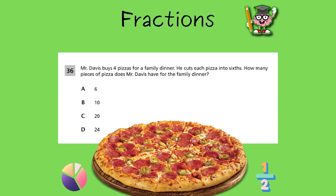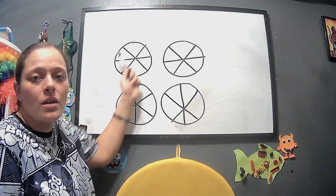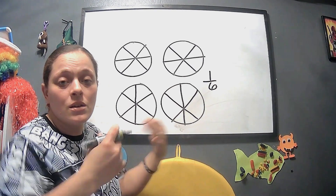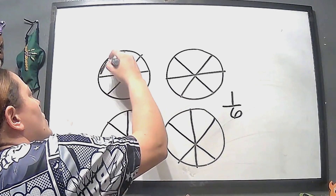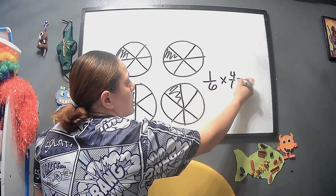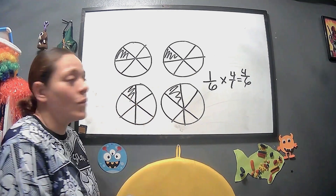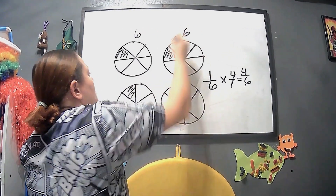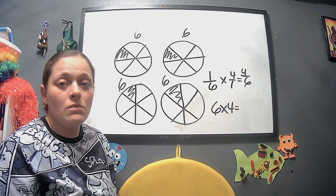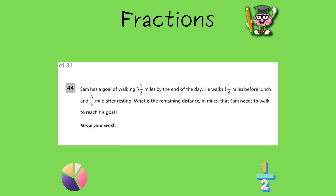Here are Mr. Davis's pizzas — one, two, three, and four pizzas. We have six pieces each, and all of them are cut into six pieces. Typically you'd think to multiply 1 sixth times 4, but that only gives us one slice of pizza per pizza. If we multiply straight across, that's 4 sixths — but that's not what we're looking for. We actually have six pieces in each of the four pizzas, so we do 6 times 4.